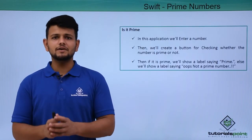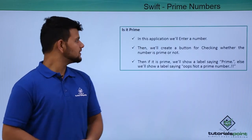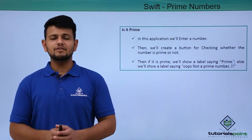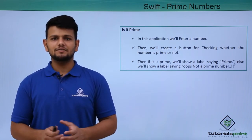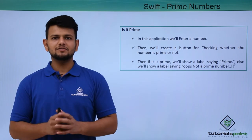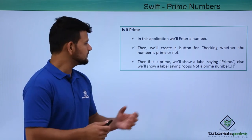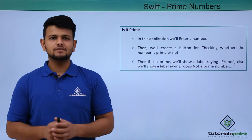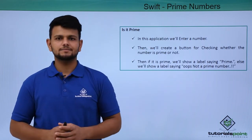Now let us see what we will do in this application. First, we will take a number from the user. Then we will create a button that will check whether the number is prime or not. If the number is prime, we will display a result saying prime. Otherwise, we will display the result saying oops, not a prime number.